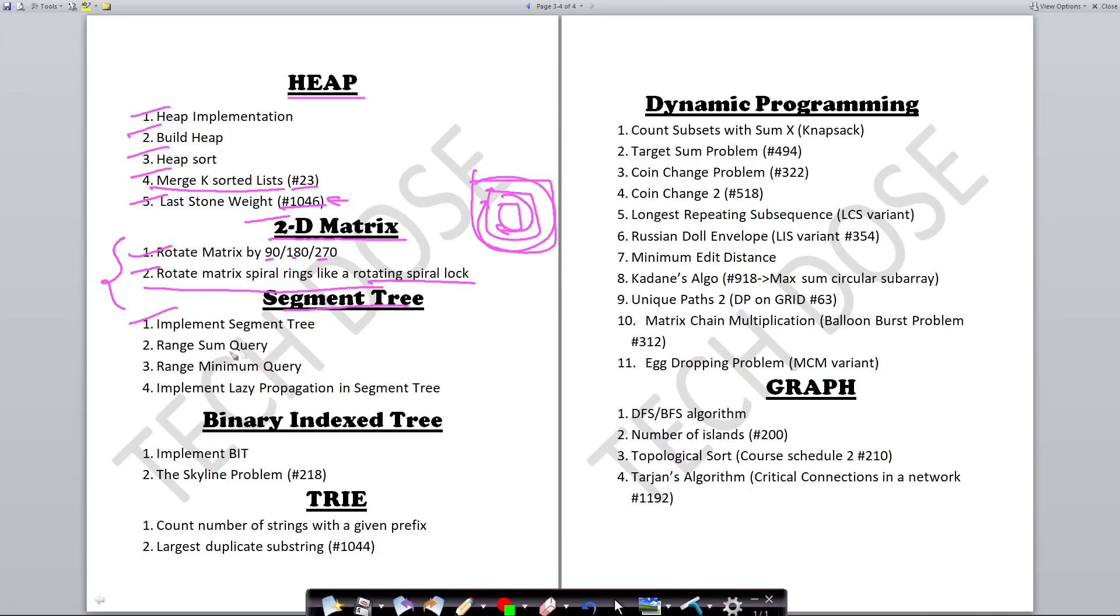From segment tree, you want to implement segment tree, range sum query as well as range minimum query. This may or may not be required—all companies may not require the harder problems. You need to find out which companies you're targeting and which company you're interviewing with, then take out some problems from this list. If you're sitting for a company like Google, then implementation of lazy propagation and segment tree is extremely important. But if you're sitting for some company paying less, these things won't be as important. You need to see which companies you're sitting for, see some interview experiences, then you'll know what questions to select and what to do.